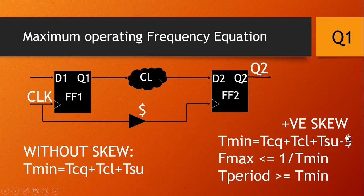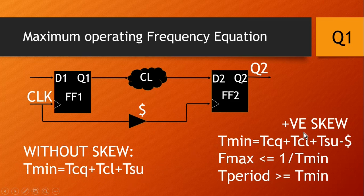If we observe this equation carefully, T_minimum is decreased by the skew value (dollar). So T_minimum is reduced by the introduction of positive skew. Since f_max is the reciprocal of T_minimum, f_max will definitely increase. For details on how these equations are derived, I have created a separate video — the link is in the description and the i-bar on the top right corner. Now let us move to the next question.